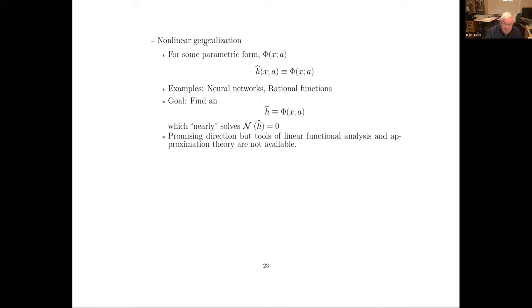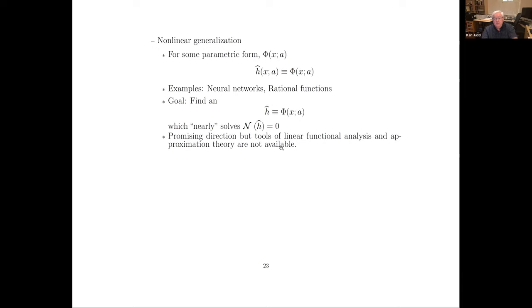We could go nonlinear — some functional form phi of x with parameters a. This is an arbitrary general nonlinear parametric form. Examples are neural networks and rational functions — polynomials divided by polynomials. These are examples of a nonlinear problem. We need to find coefficients a such that h-hat nearly solves the operator equation. These are promising directions, but the tools of linear functional analysis and approximation are not really available for them.